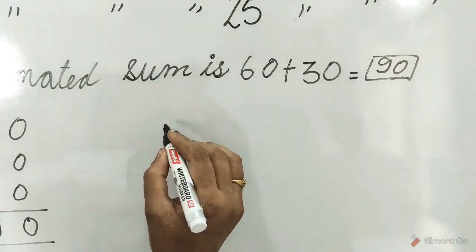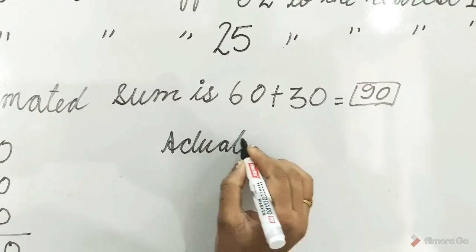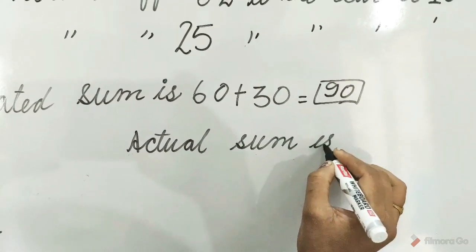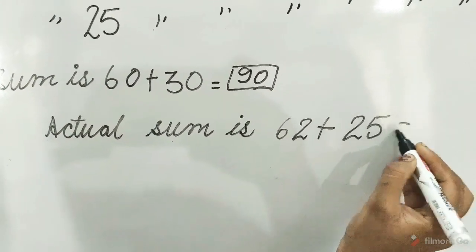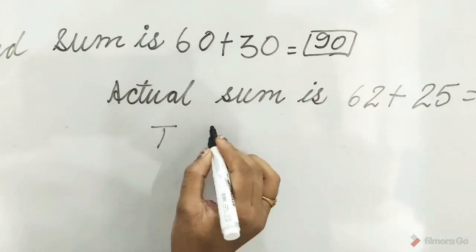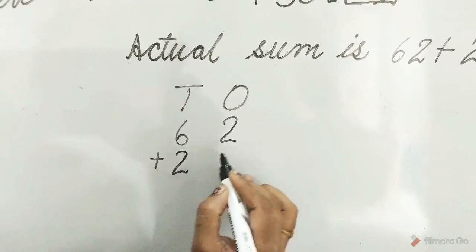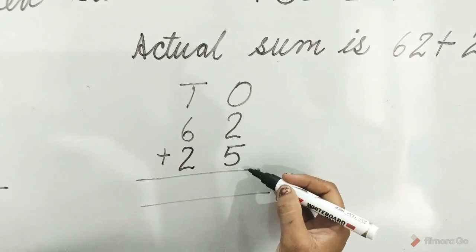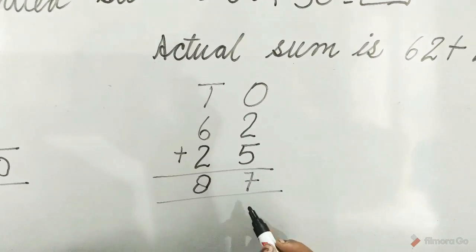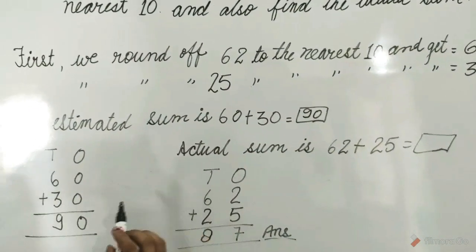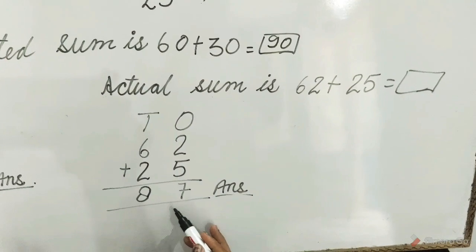Now the actual sum — we have to solve the actual sum. Actual sum is 62 plus 25 is equal to what? Write T for tens and O for ones: 6 tens 2 ones plus 2 tens 5 ones. Add ones first: 5 plus 2 is equal to 7, 6 plus 2 is equal to 8. So children, the estimated sum is 90 and the actual sum is 87.